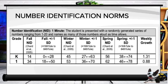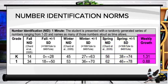Looking at kindergarten and first grade in fall, winter, and spring: in fall, kindergarten should be about 14 and first grade about 34. In winter, we want to see improvement to about 45 for kindergarten and 53 for first grade. In spring, we're looking at 56 for kindergarten and 62 for first grade. Each column also shows the standard deviation and weekly growth rate.